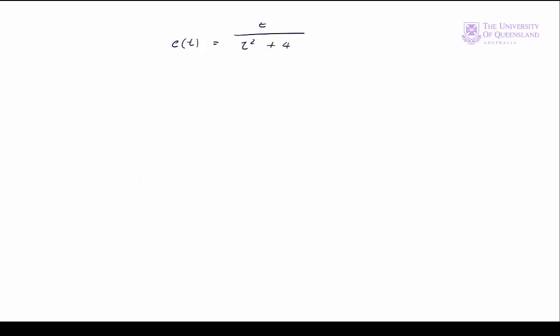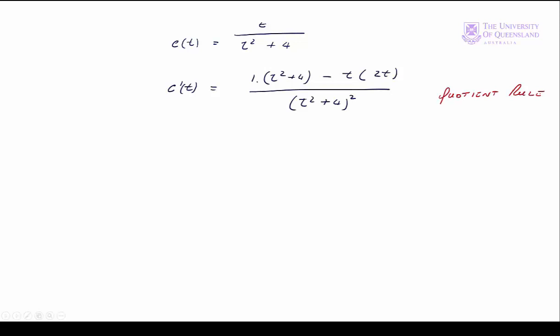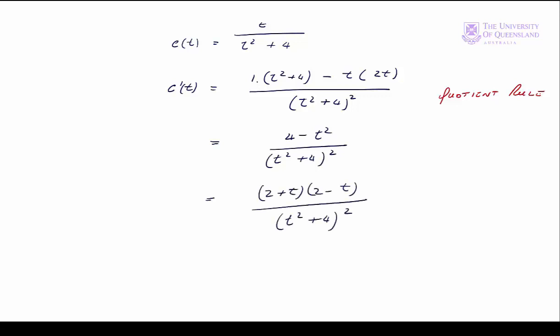We have our function and we take the first derivative by applying the quotient rule. We can simplify and factorize the numerator. Now we have the first derivative. Our first order condition says that we solve for t when the first derivative is equal to 0.